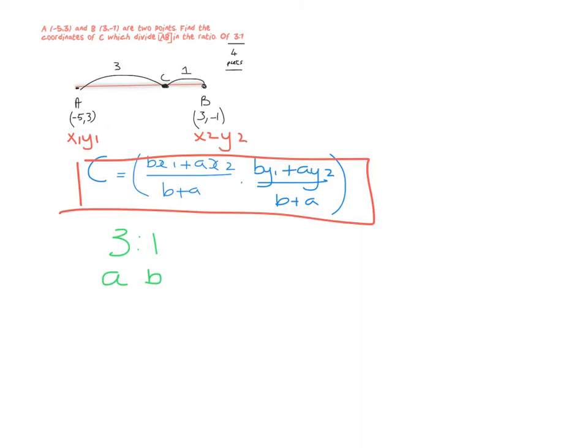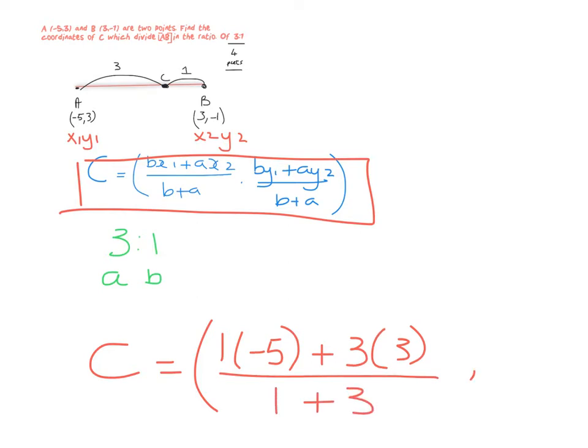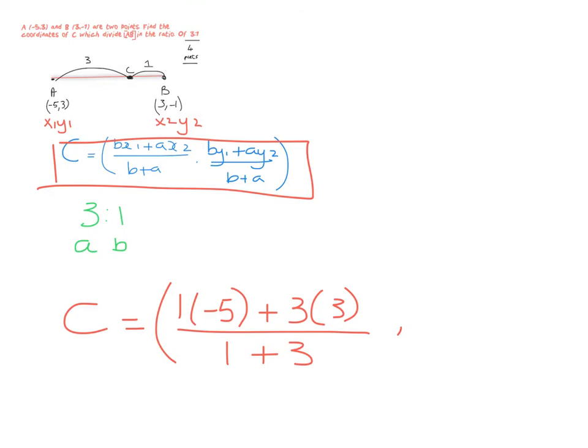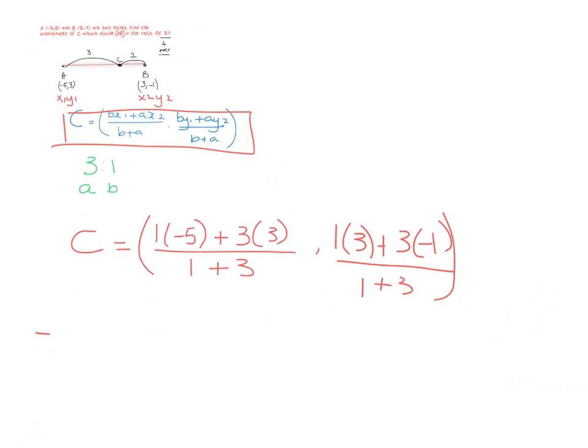C is equal to: instead of writing b, I'm going to write 1. 1 times (-5) plus 3 times 3, all divided by 1 plus 3. Your other coordinate is: 1 times 3 plus 3 times (-1), all over 1 plus 3. To break that down further, you will get (-5 + 9) all over 4, and your other coordinate you're going to get (3 - 3) all over 4.